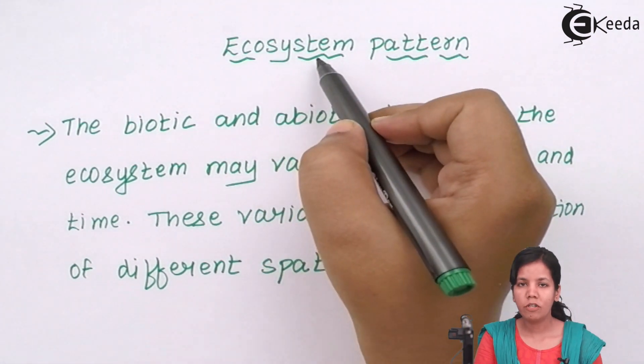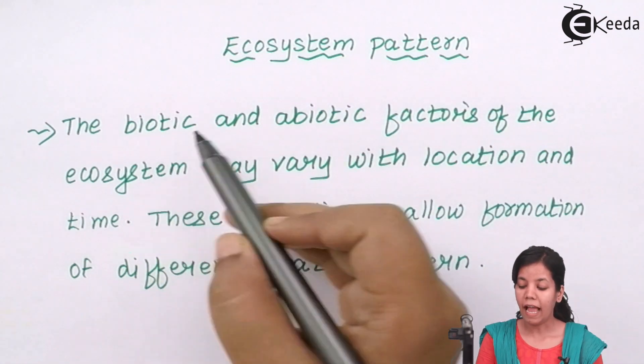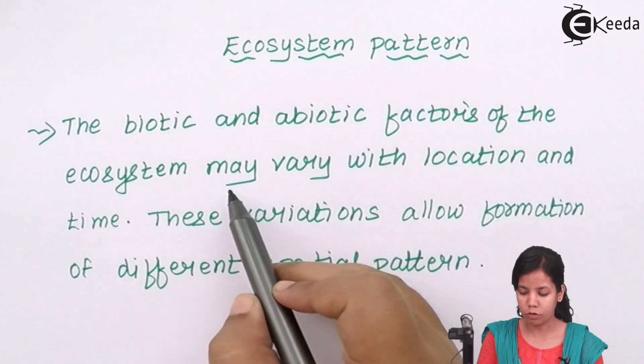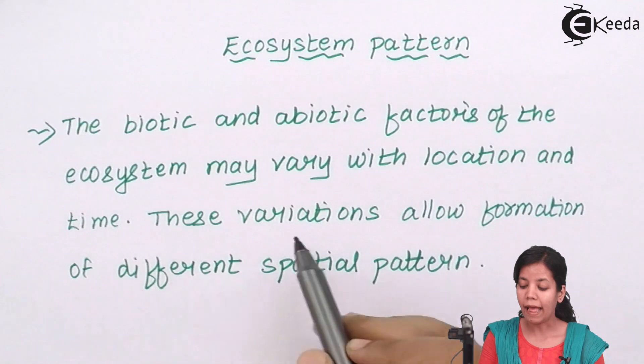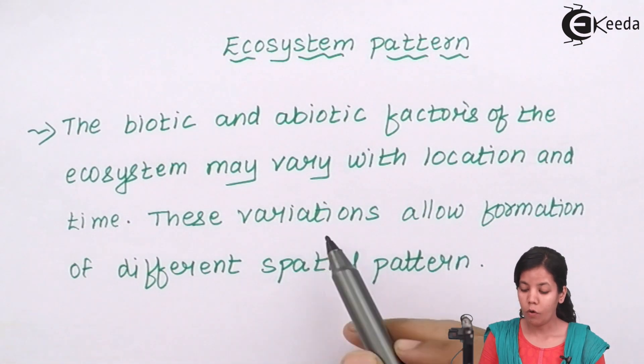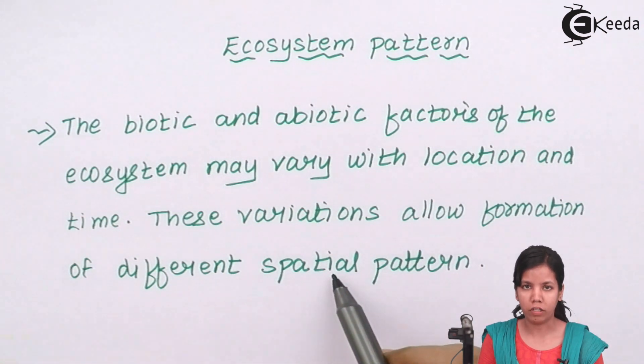The definition of ecosystem pattern is the biotic, that is living, and abiotic, the non-living factors of an ecosystem may vary with location and time and these variations allow formation of different spatial pattern. When I say spatial pattern, it means different varieties of tree. If there are only mangroves in a particular forest or a beachside, then that is one type of spatial organization.